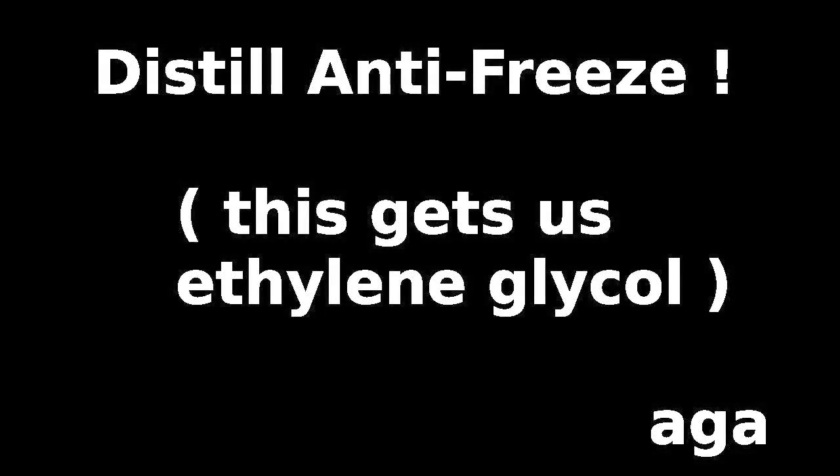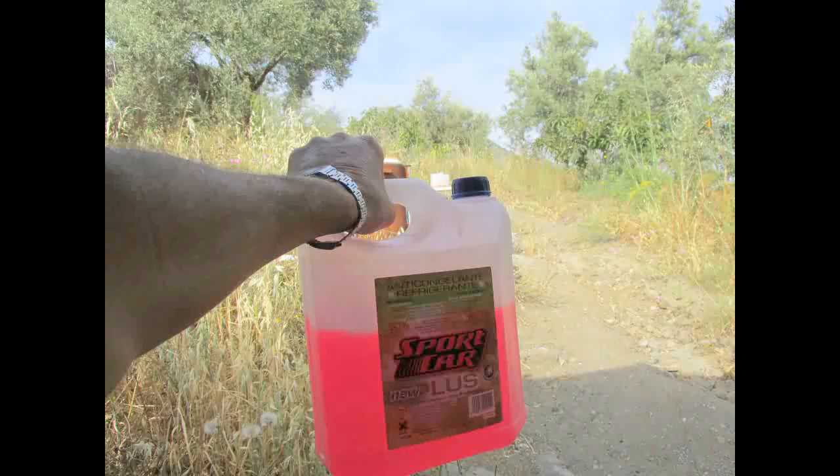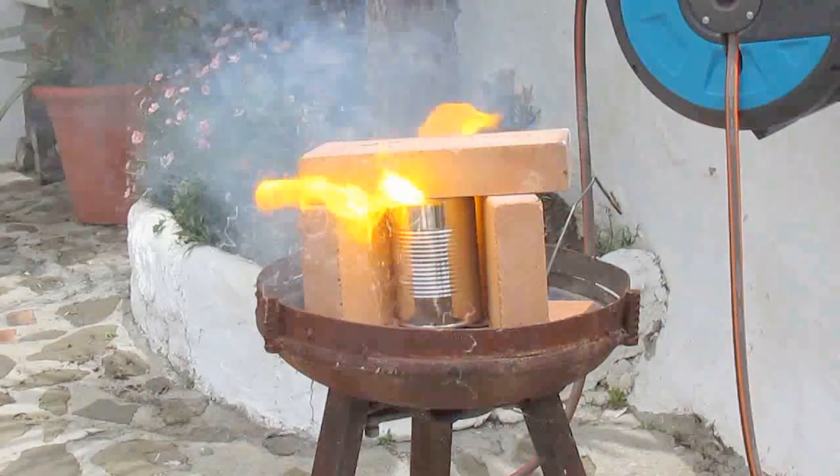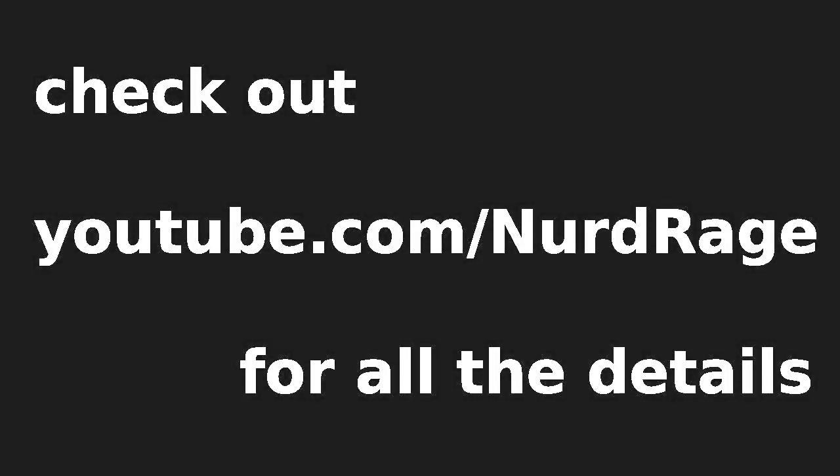Hi! In this video we're going to extract ethylene glycol from antifreeze. Later we can use that to make dioxane and have one more try at making pure sodium metal. Check out the Nerd Rage channel for all the details. Links from the description.